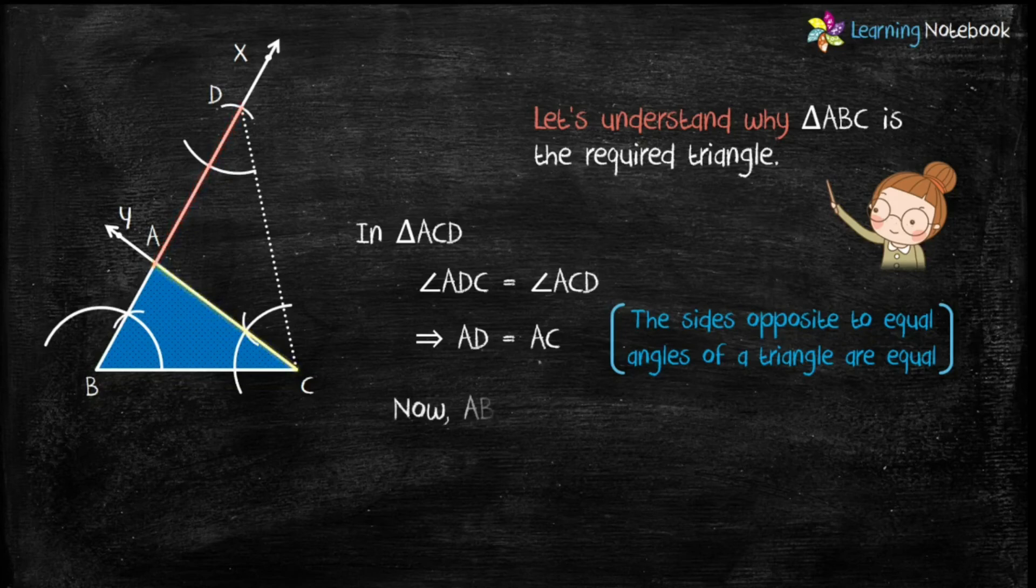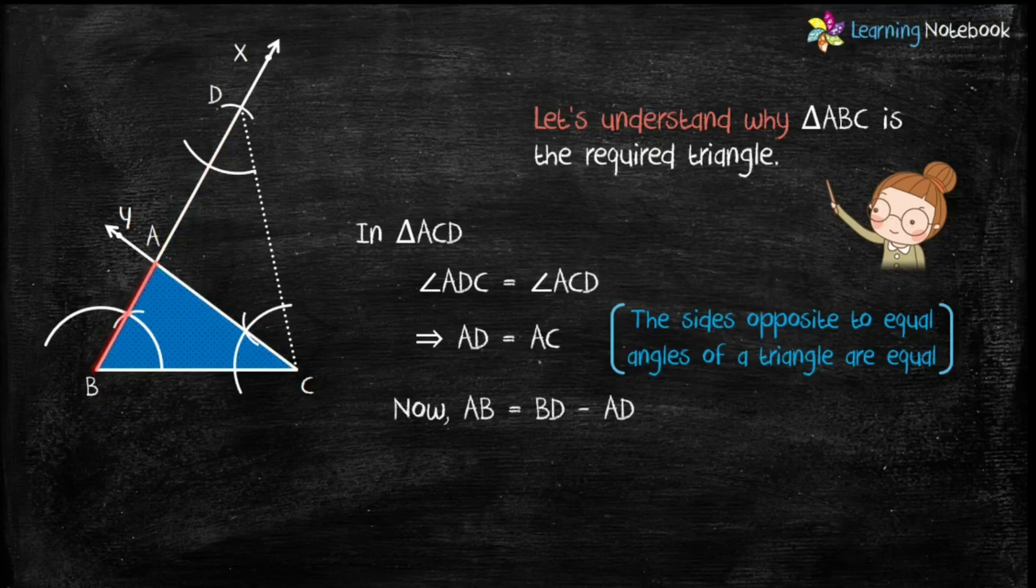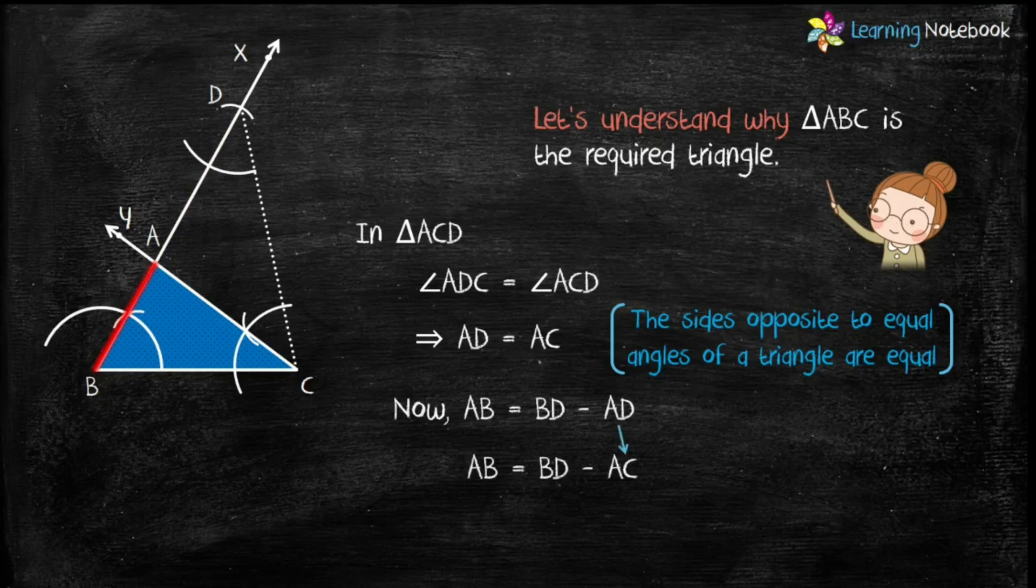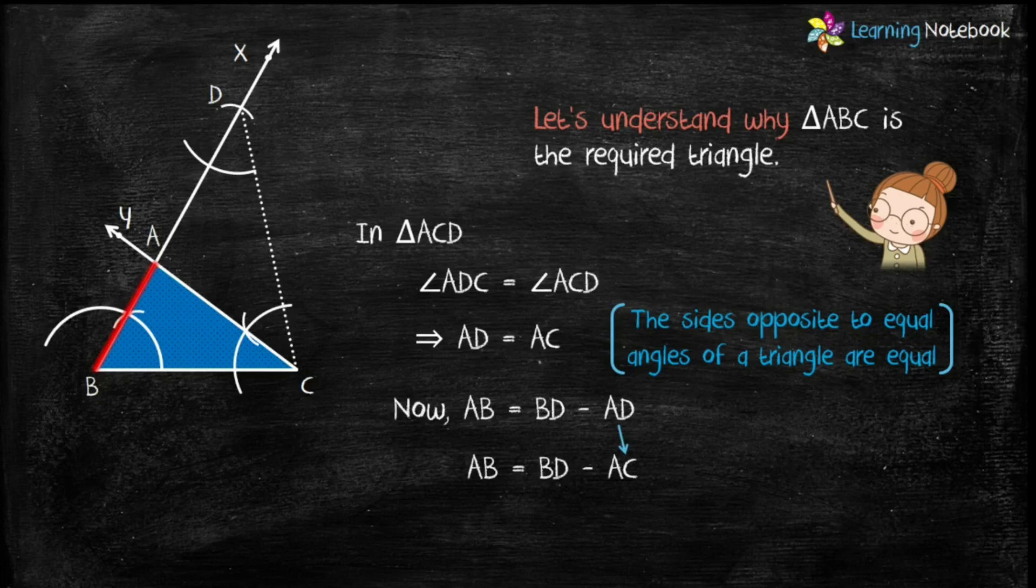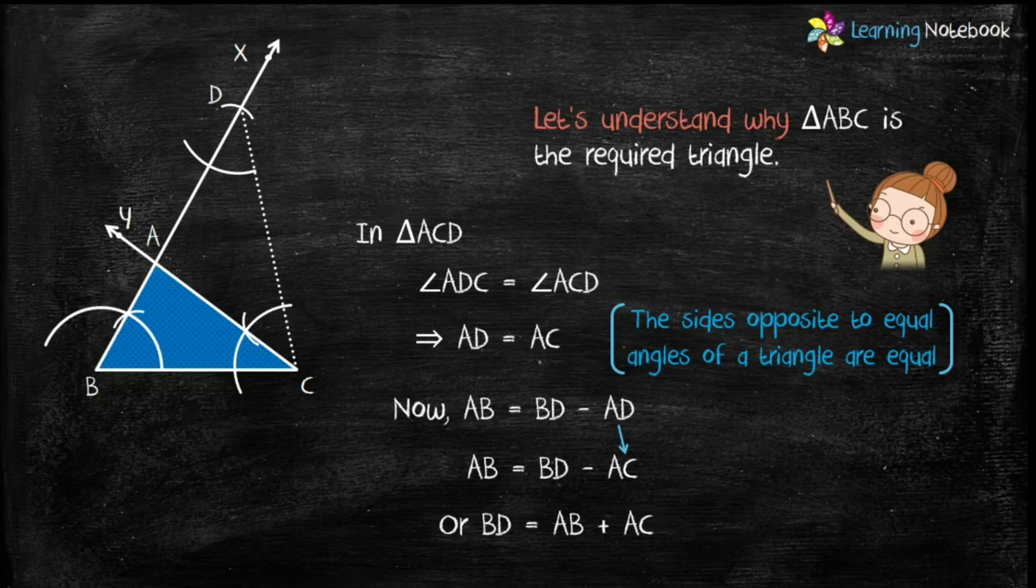Now AB equals BD minus AD, and we know AD equals AC. Therefore AB equals BD minus AC, or we can say BD equals AB plus AC, or BD equals sum of other two sides of a triangle.